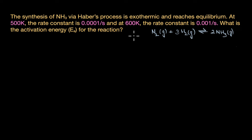We need to use the Arrhenius equation that describes the effect of temperature on the rate of a reaction. The Arrhenius equation is k equals A into e power minus Ea by RT, where k is the rate constant.